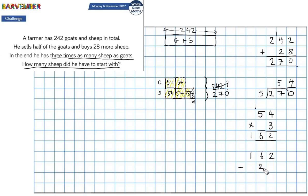So I've got 162 subtract 28 and that gives me 134. So the final answer is 134 sheep. Okay. I hope that helps.